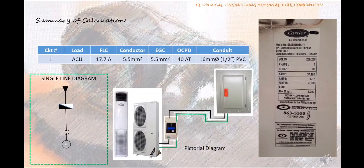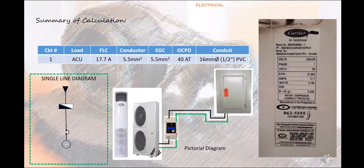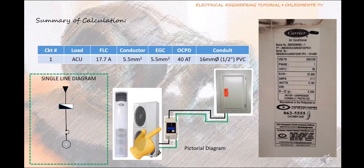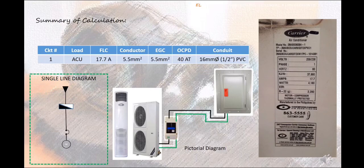Here is the summary of our calculation showing the schedule of loads, single line diagram and pictorial diagram. Circuit breaker is provided near the outdoor unit for easy access during troubleshooting, repair and maintenance. Equipment Grounding Conductor (EGC) in green colored wire is also provided for safety during ground fault.